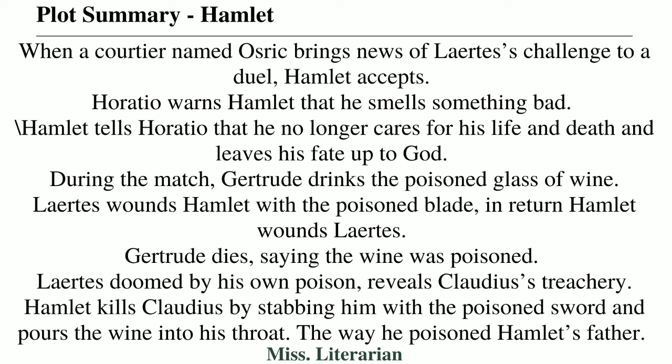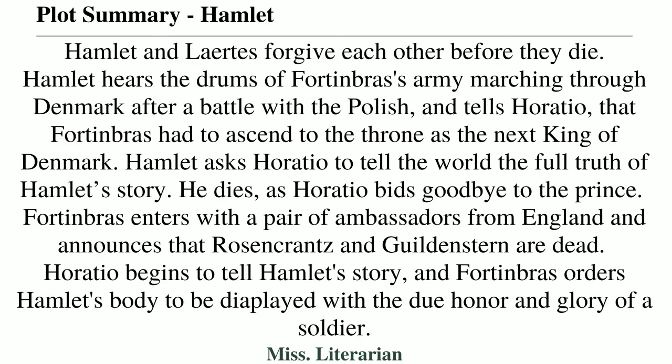He says he will leave his fate up to God. During the match, Gertrude drinks the poisonous wine glass before Claudius can stop her — the wine that should have been given to Hamlet. Laertes wounds Hamlet with a poisonous blade, but when they exchange swords, Hamlet wounds Laertes. Gertrude falls, saying the wine was poisonous, and she dies. Laertes, stabbed by Hamlet's sword, realizes he is doomed by his own poison. He then reveals Claudius's treachery. Using this chance, Hamlet kills Claudius by stabbing him with the poisonous sword and pouring the poisonous wine down his throat — the same way Claudius had poisoned Hamlet's father.